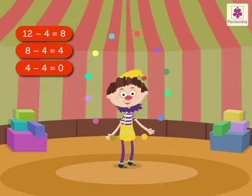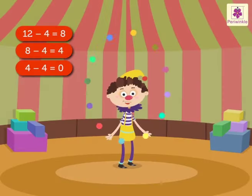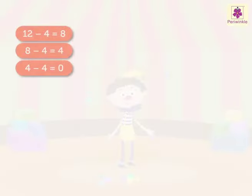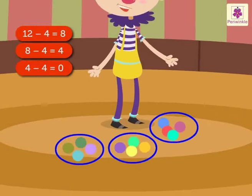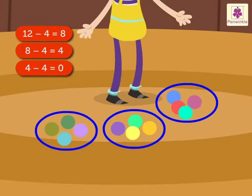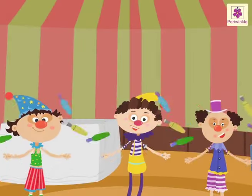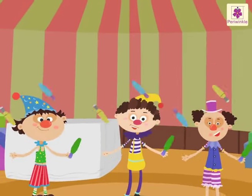So, when Jimbo divided twelve balls into equal groups of four, he got three groups. Did you have fun with Jumbo, Jimbo and Jojo?